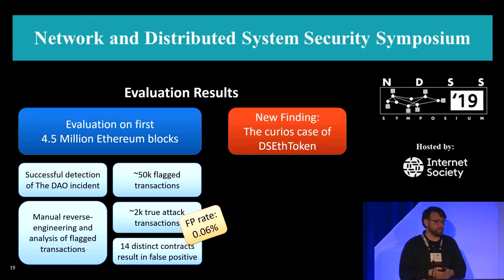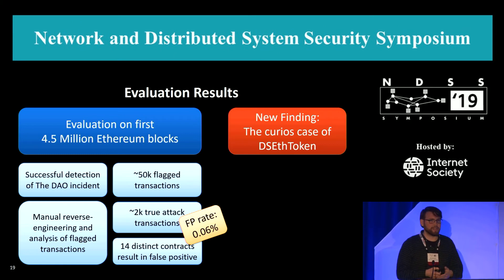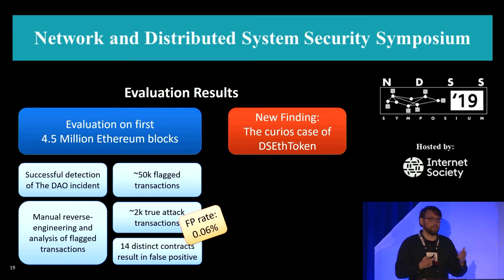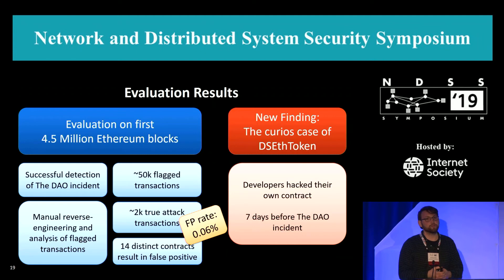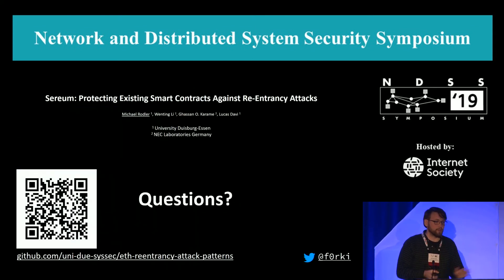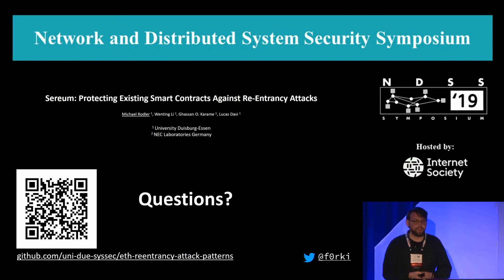To conclude, a story about the curious case of the DSETH token. We found 43 transactions which are kind of weird — they all started with a function called the attack function, so it was pretty obvious what was going on. We did some research and found out that the developers themselves attacked the contract, because they found it was vulnerable and had no other way to get the funds out. This actually occurred seven days before the DAO incident. We have examples for those re-entrancy attack patterns on our GitHub. I'm happy to take questions.